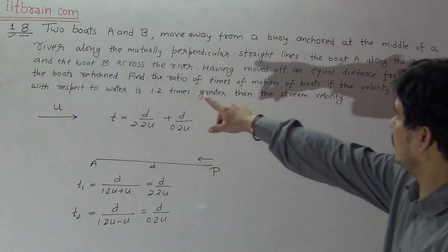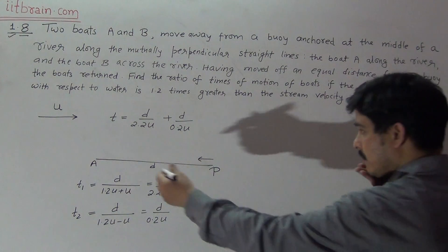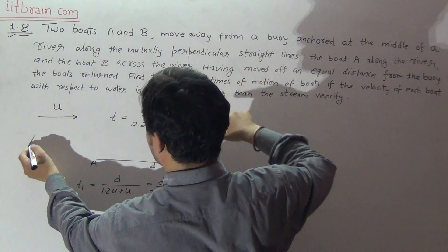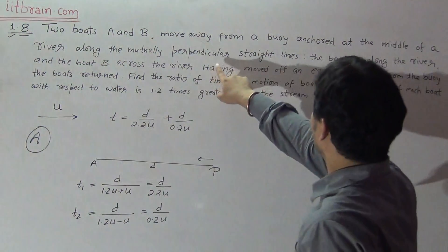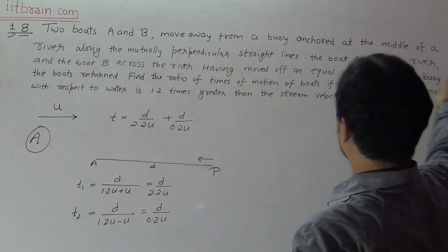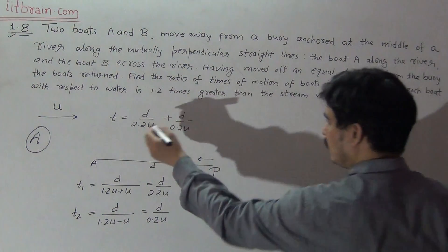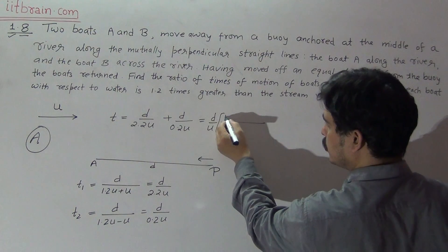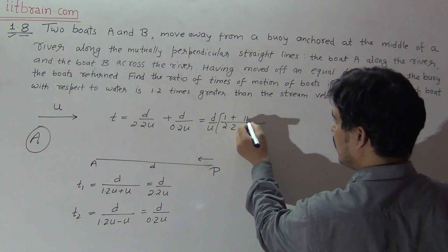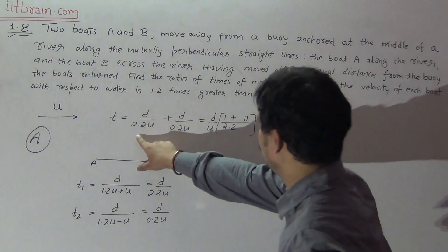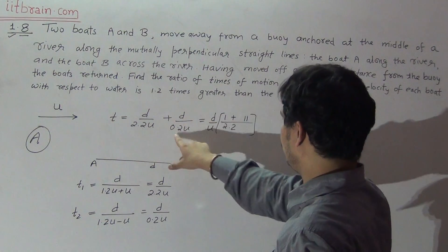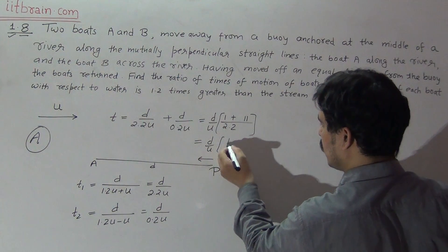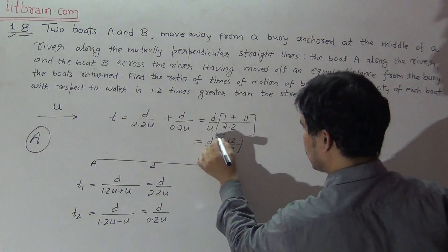We have to find the ratio of times of motion. For person A moving along the river, total time taken — taking D over U as common — works out to 12 by 2.2, using the LCM of 2.2 and 0.2. So total time taken by the first person is (D/U) × (12/2.2).